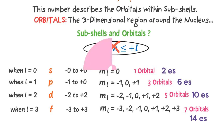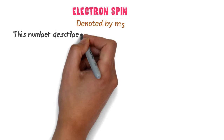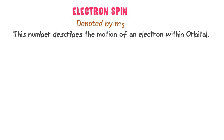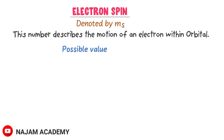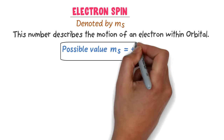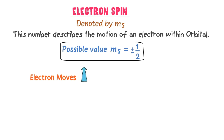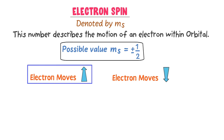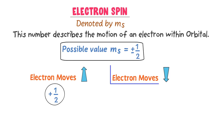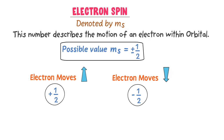Now the final and fourth quantum number is electron spin. It is denoted by m sub s. This quantum number describes the motion of an electron within an orbital. The possible values of electronic spin are ms equal to positive one half or negative one half. Remember that an electron either moves in the upward direction or in the downward direction. If the electron moves in the upward direction, its spin is positive one half. If the electron moves in the downward direction, its spin is negative one half.